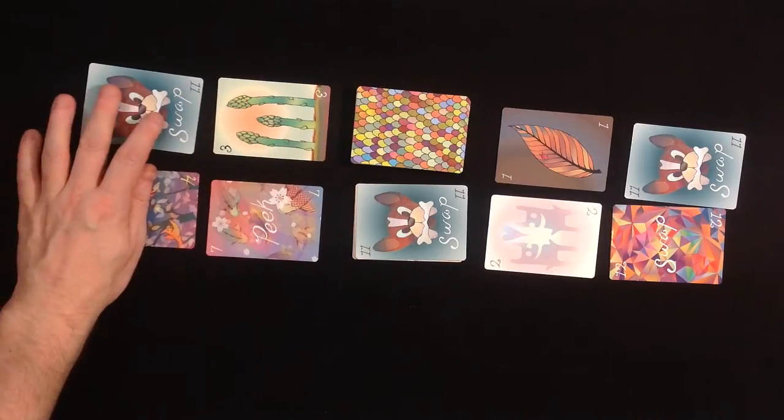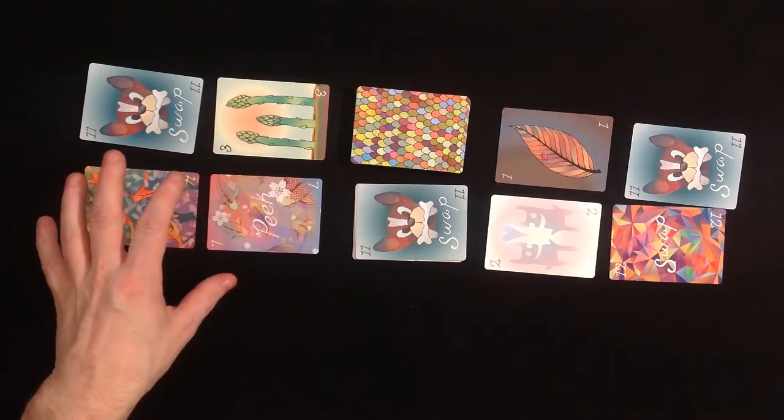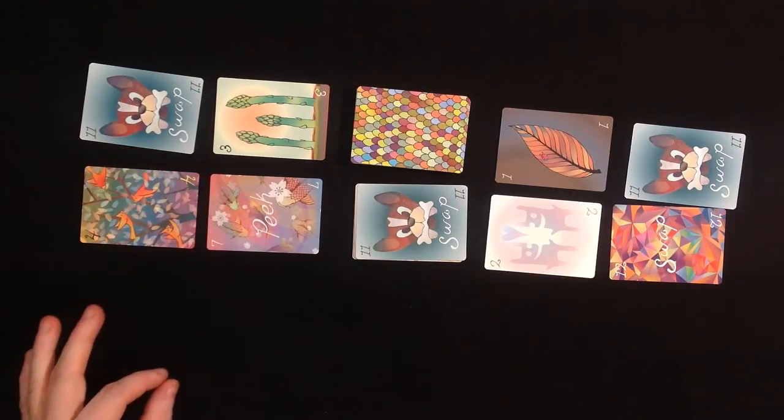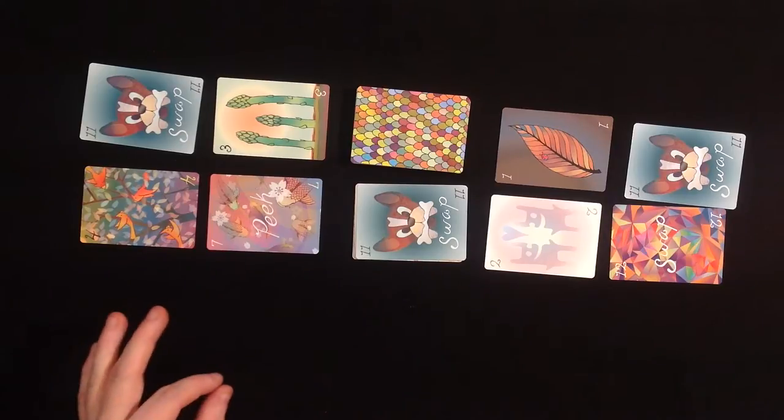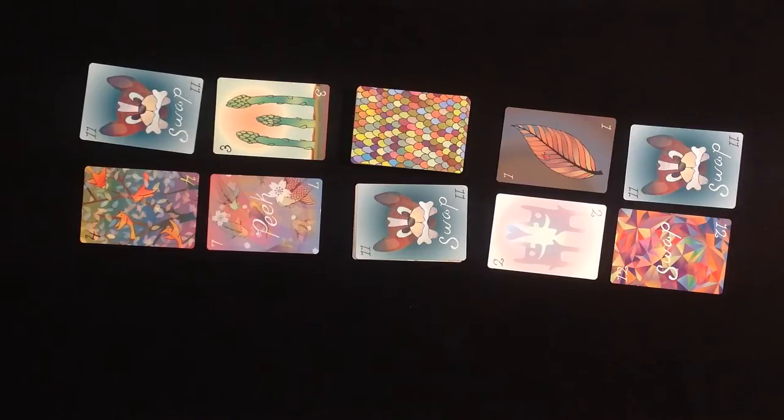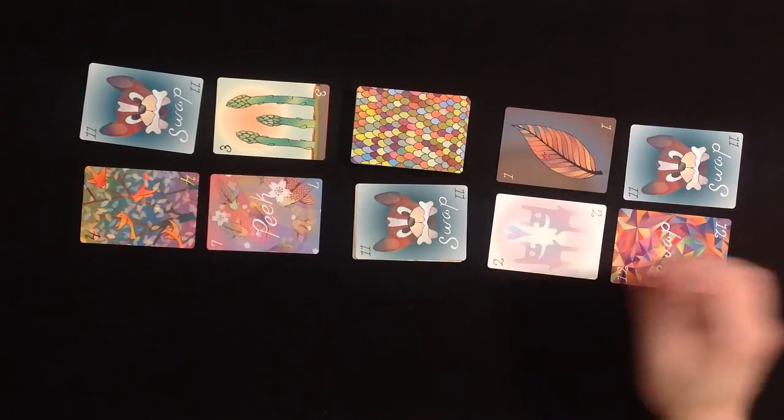Now what happens? The player with the lowest value, with the lowest sum, writes down zero points. All other players write down their sum as minus points, as negative points. You don't score any positive points, you only score negative points. So this player would have twenty-six negative points.